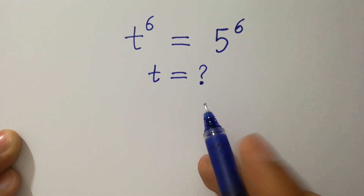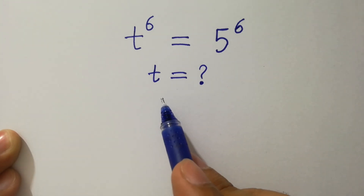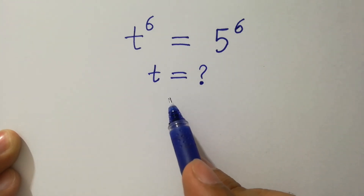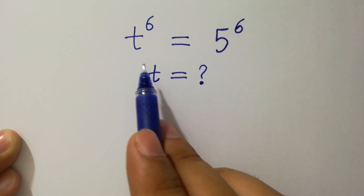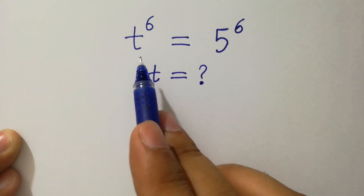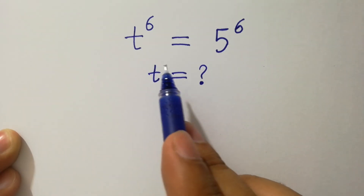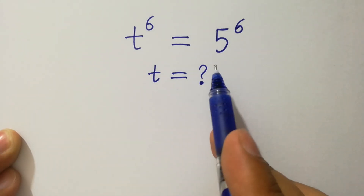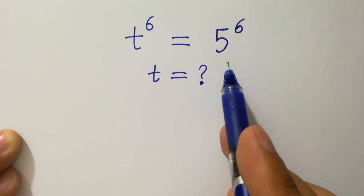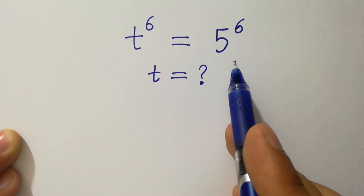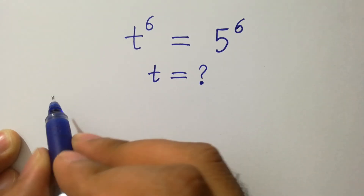Hello friends, find the value of t if t to the power 6 equals 5 to the power 6. Let's have a solution.